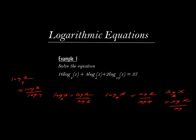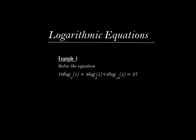So we can now simplify that equation further. Where we have log x to base 2, we write log x over log 2. Where we have log x to base 4, that will be log x over log 4. Where we have log x to base 16, that will be log x over log 16. So that is plus 4 log x over log 4, then log x to base 16, we will have plus 2 log x over log 16. That equals 37.